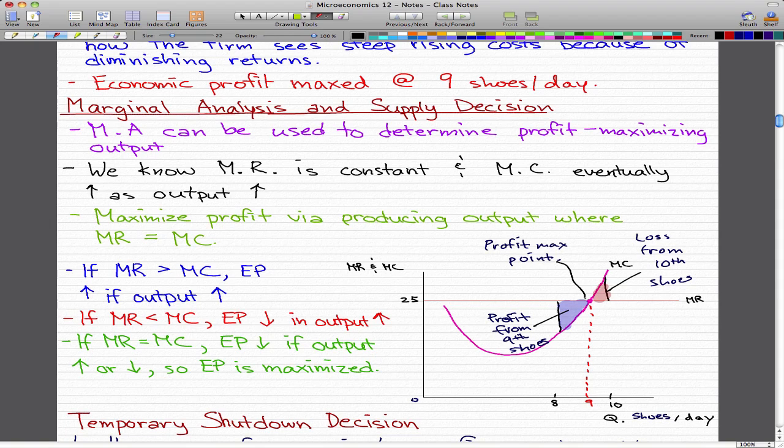That is because marginal cost equals marginal revenue. From this graph, we can see that if marginal revenue is greater than marginal cost, which happens here at a quantity of 8 shoes per day, the marginal revenue is above the marginal cost, then economic profit increases if output increases.